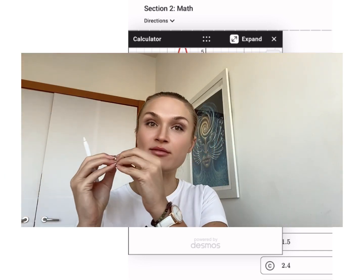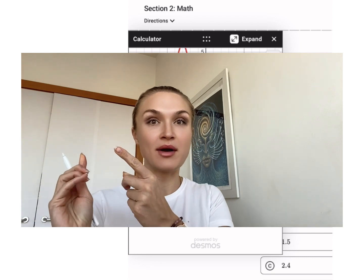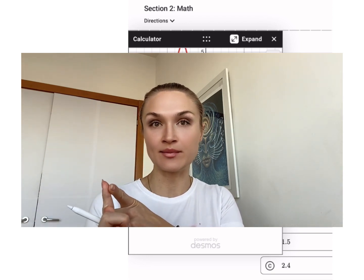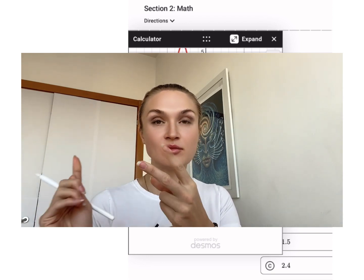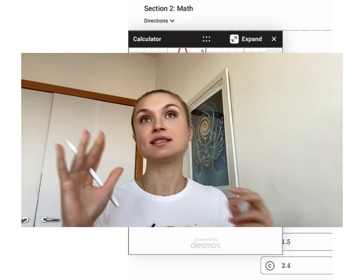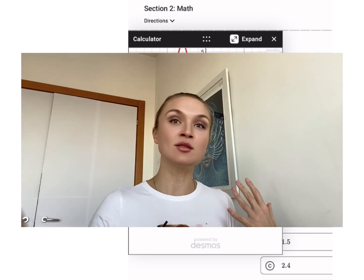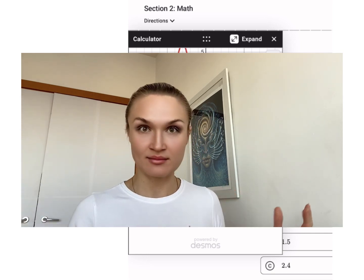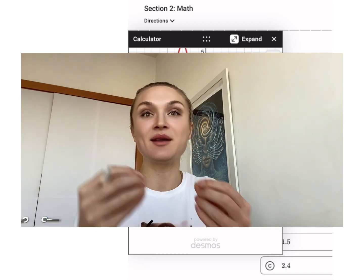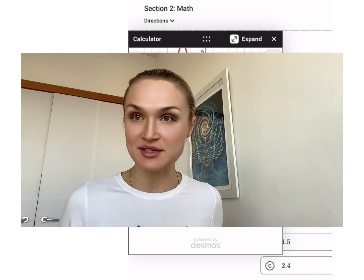So what we did is we found a by starting with our vertex form, then we plugged in one of the values. Sometimes the SAT can say, oh, and the parabola passes through the origin. What does that mean? That means zero, zero belongs. I hope this really helped you.